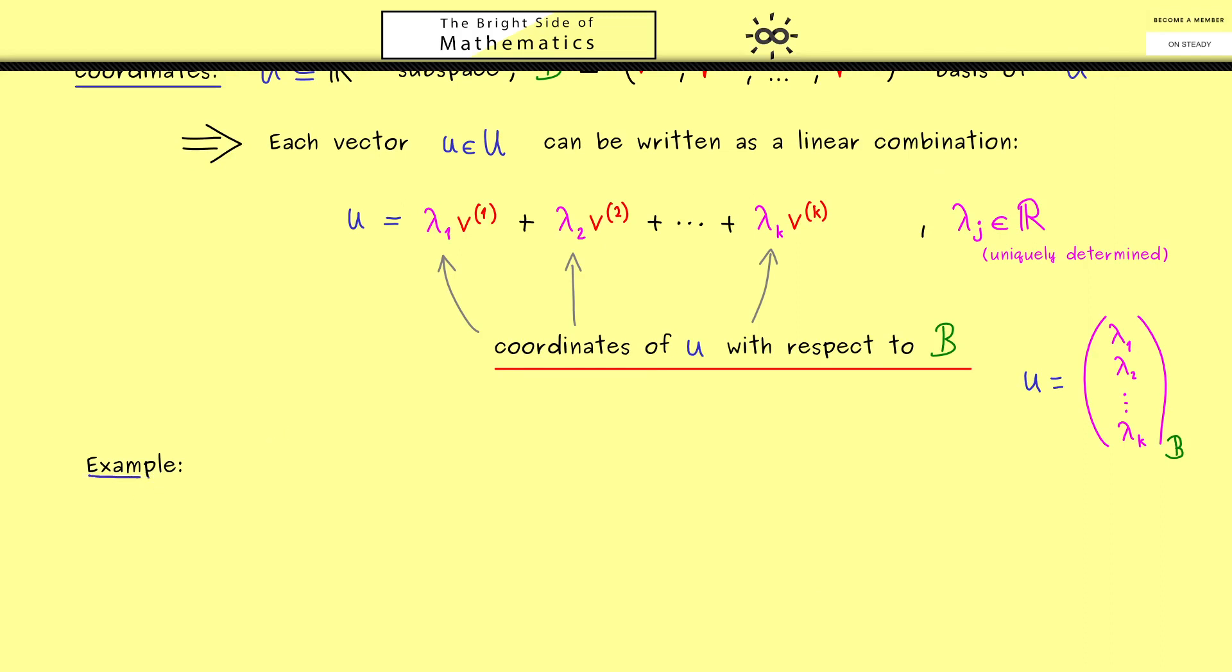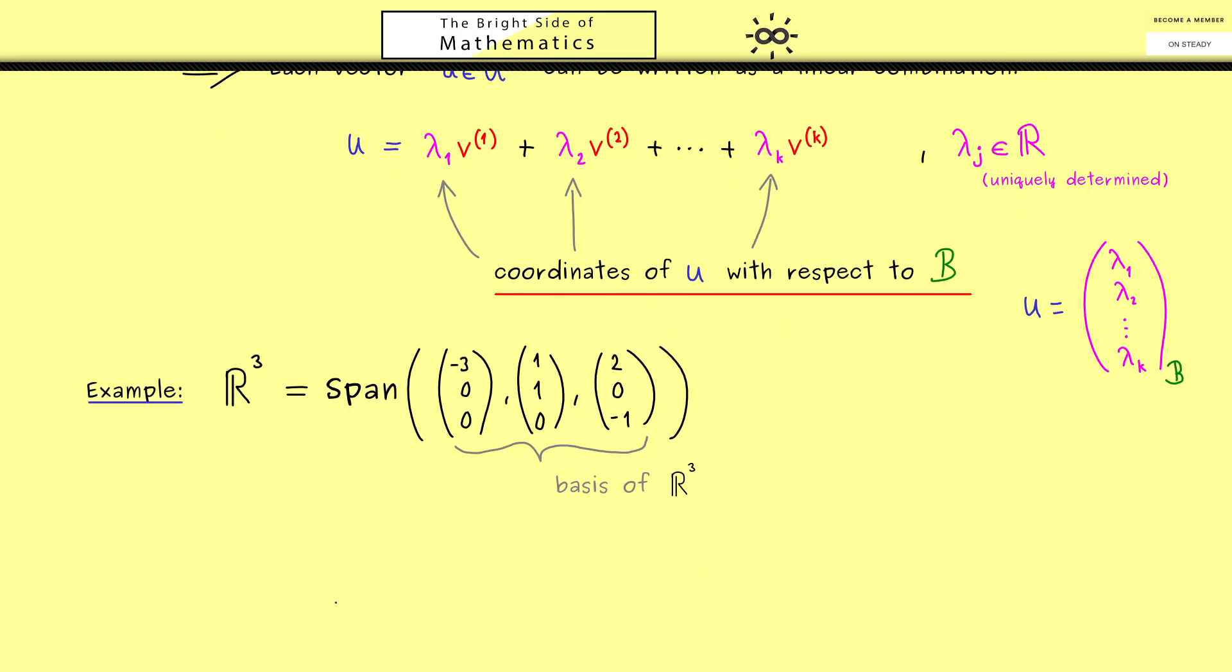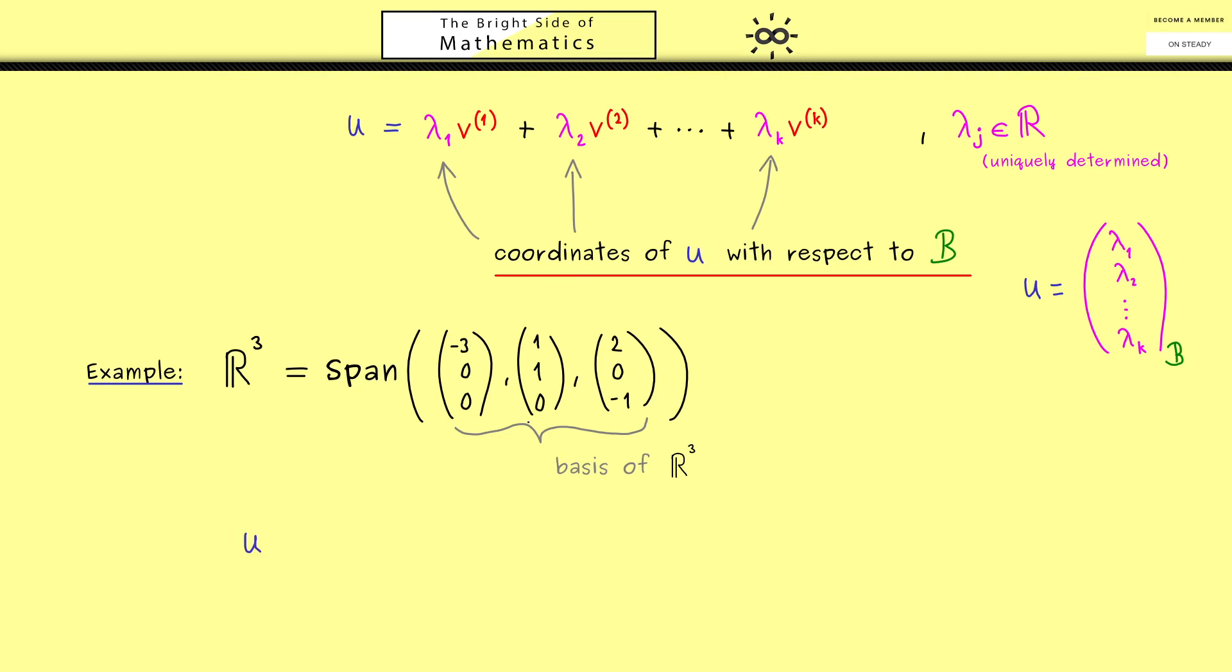To end this video here I would say let's look at an example. From the last video we already know that R³ has this nonstandard basis here. And now we take a vector u and ask what are the coordinates of u with respect to this basis. And there let's take the vector 1, 2, -1. And now you already know here these numbers are the coordinates of u with respect to the standard basis. But obviously not with respect to this basis here. However we already see which linear combination we can choose to get to the vector u.